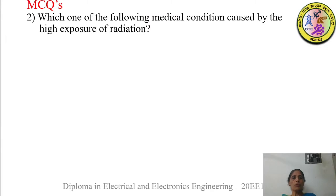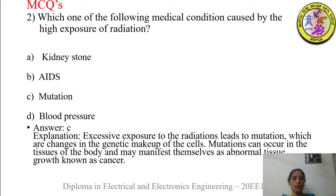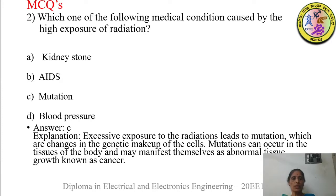Next MCQ: which one of the following medical conditions is caused by high exposure to radiation — kidney stone, AIDS, mutation, or blood pressure? The correct option is mutation. Excessive exposure to radiation leads to mutation, which involves changes in the genetic makeup of the cells. Mutations can occur in the tissues of the body and may manifest themselves as abnormal tissue growth known as cancer. So the answer is option C — mutation.